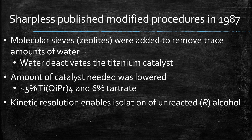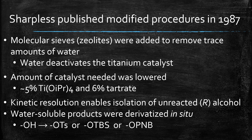He also developed procedures for kinetic resolution. If you had a racemic allylic alcohol, these conditions would epoxidize one of the enantiomers while the other enantiomer would be recovered as the alcohol — you'd get the R alcohol out while the S alcohol undergoes epoxidation. He also came up with solutions for water-soluble products by derivatizing them in situ: as the product was formed, the epoxy alcohol could be converted to the tosylate, a silyl ether, or a para-nitrobenzoyl ester, making it less water-soluble and easier to isolate.